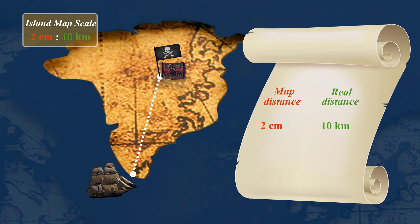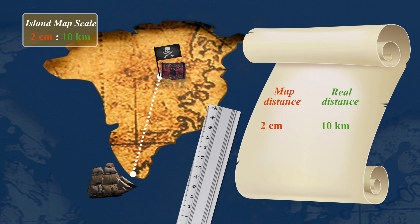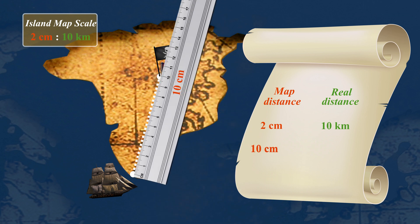The map distance from the ship to the treasure is 10 centimeters. So what is the real distance? The map distance is 5 times the scale distance, so the real distance to the treasure is 5 multiplied by 10 kilometers. That's 50 kilometers to the treasure.